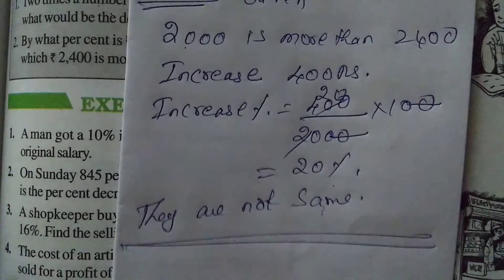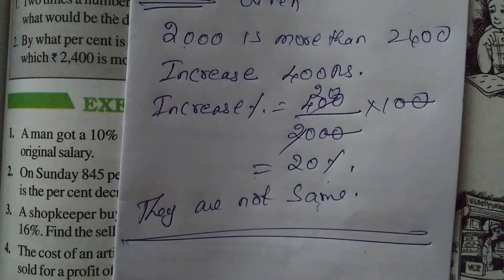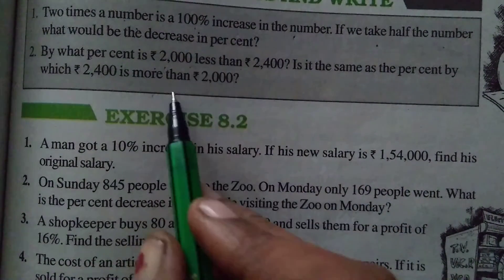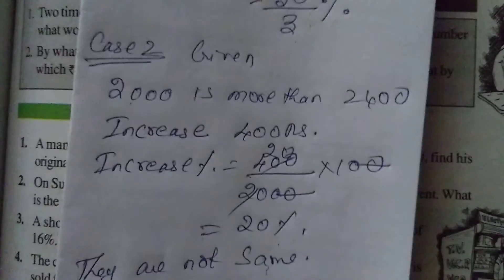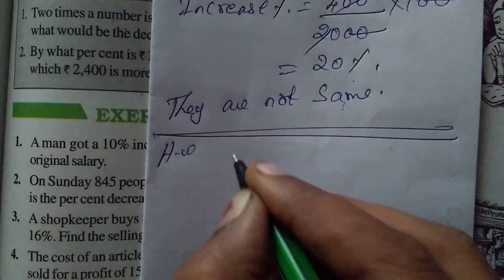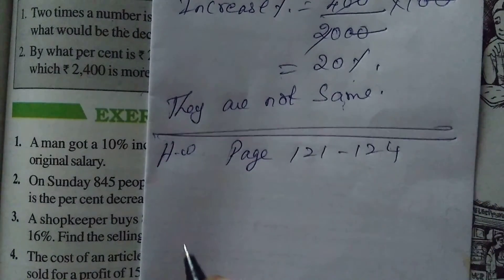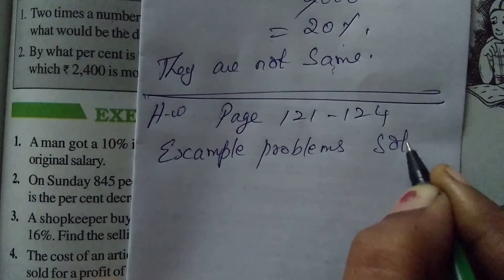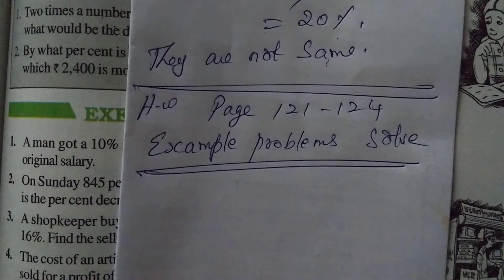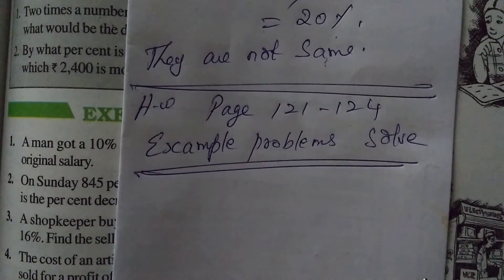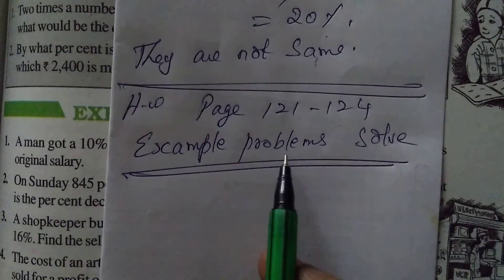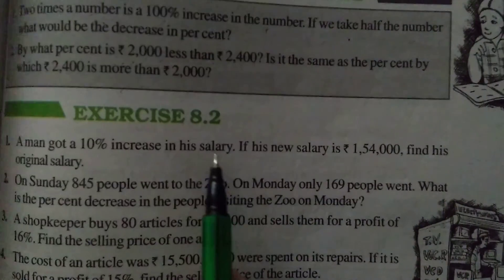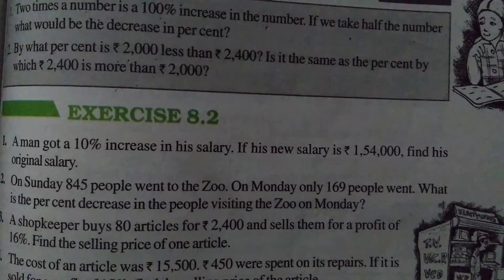Repeat this two or three times and watch the video so that you can understand clearly. The words 'more than' and 'less than' play an important role. Today's class homework is from page 121 to 124, example problems — solve it as homework. Since solutions are already there it is easy for you. If any difficulty, get it clear through WhatsApp. In the next video let us start with exercise 8.2. Keep practicing and get any doubts clarified.